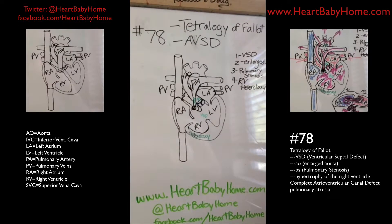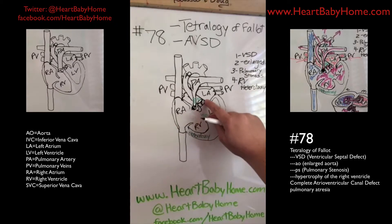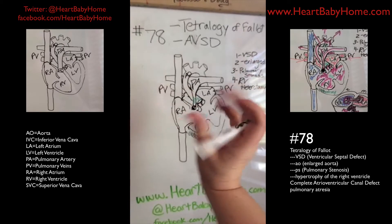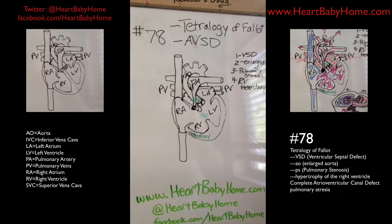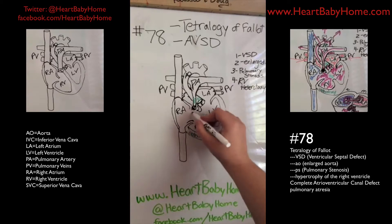This heart also has an atrioventricular canal defect. Basically there's a hole right in the middle of the heart. If you take the heart and flip it up so you're looking straight down through the top, you'd have your tricuspid valve right here.